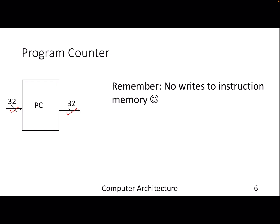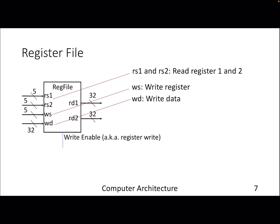The content of the PC provides the address through which you get your instruction. Next comes the register file — a collection of registers. As shown, there are two registers available for reading, each specified with five bits. To address 32 registers we need five bits to identify one of them. There is also one register for writing, and a separate 32-bit input for the data being written into that register.